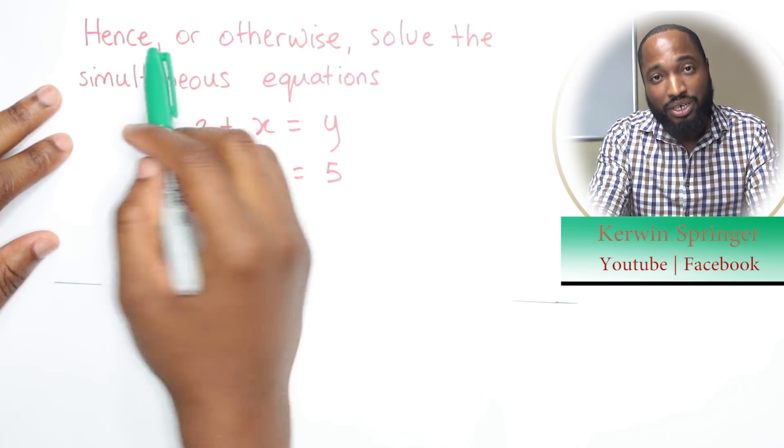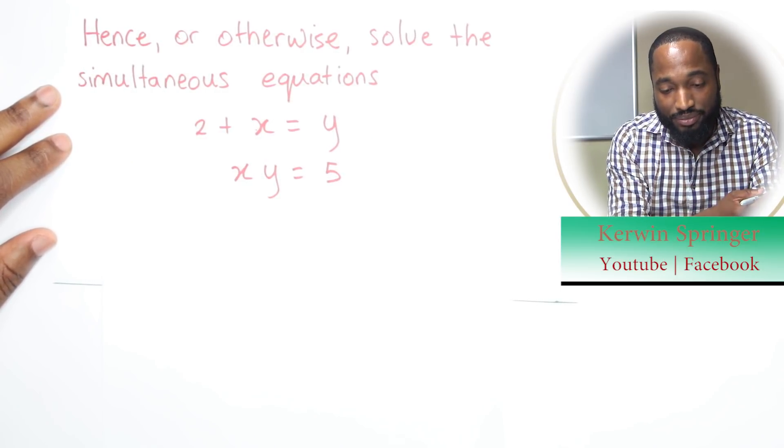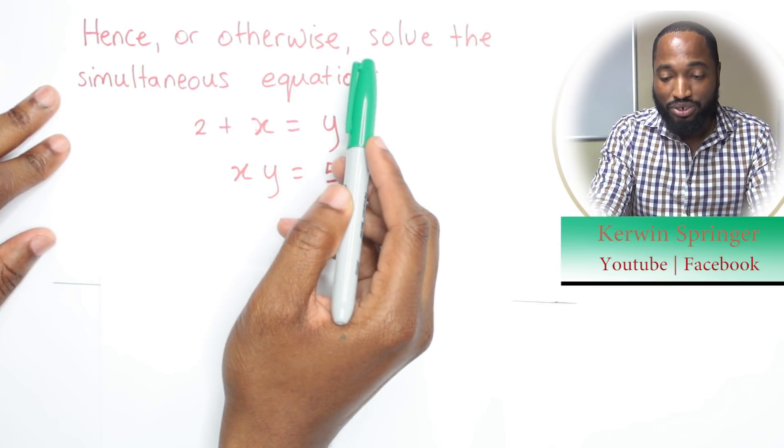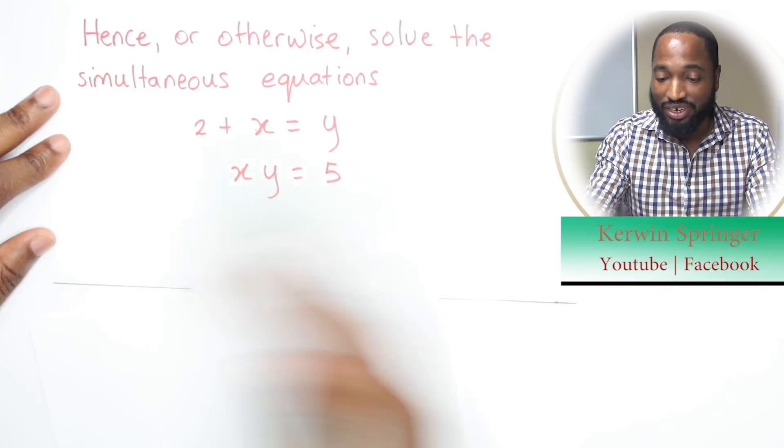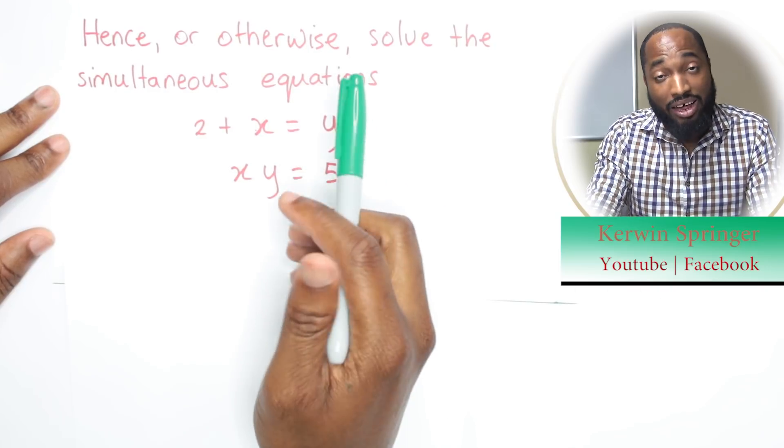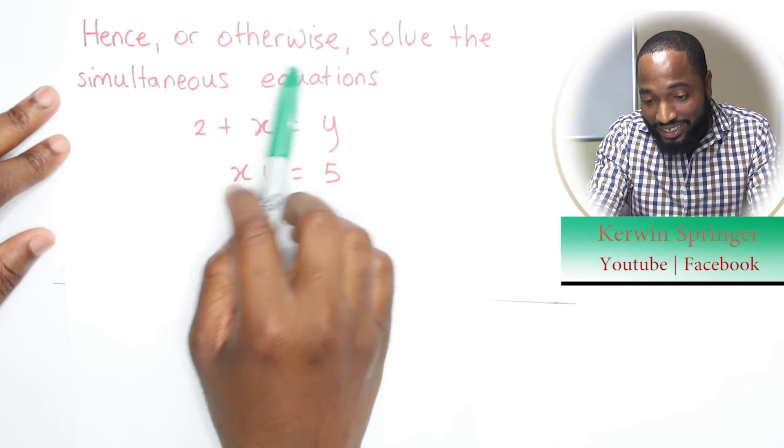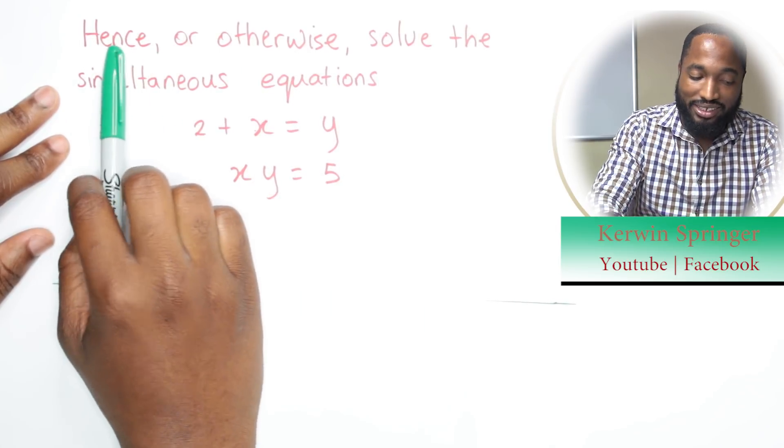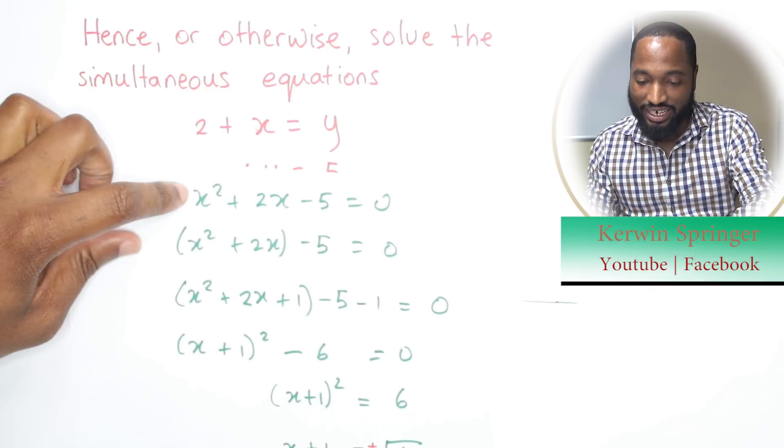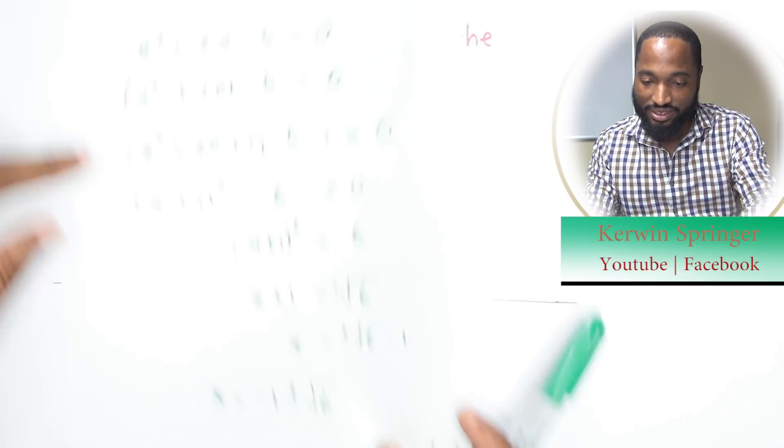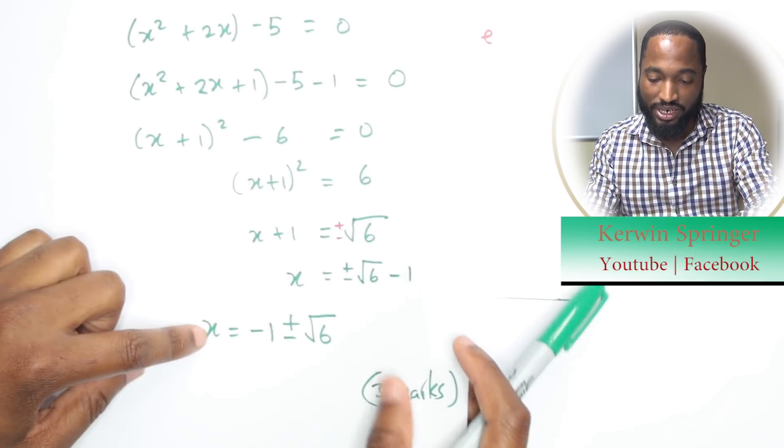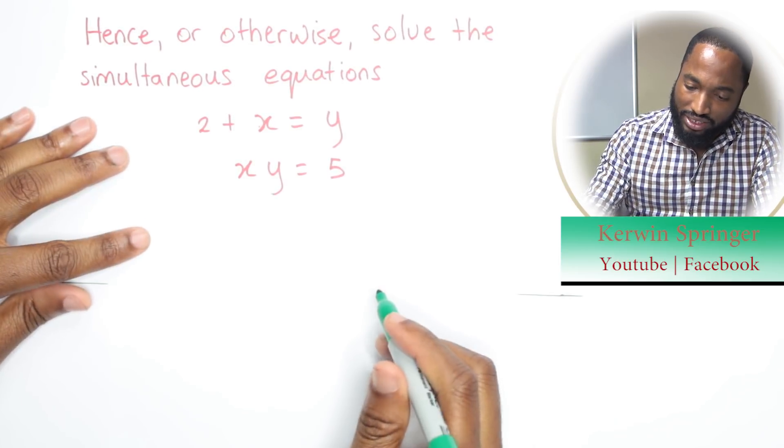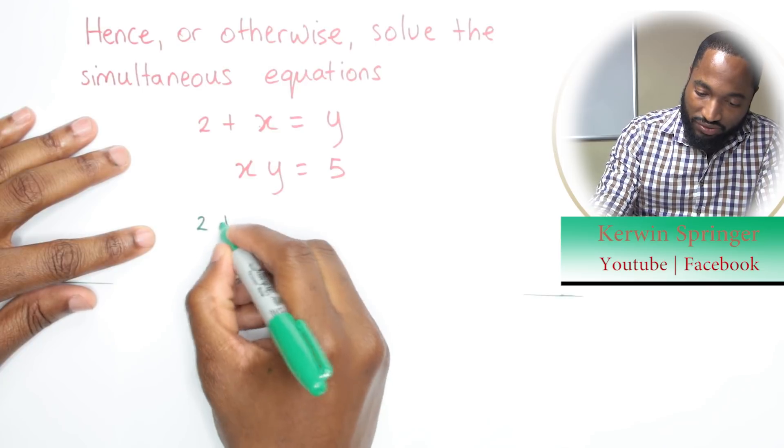But before we solve that, we have to pay attention to one word in this question. Hence. Hence means using information from before now. So you can do it that way or you could come up with your own brand new thing and just work with this as if you didn't do anything before. So I advise the wise thing to do is don't use the otherwise. It stays the hence. Hence. So what did we discover? That this gives me this. This gives me this. That's one problem. So I'm already sensing something here.